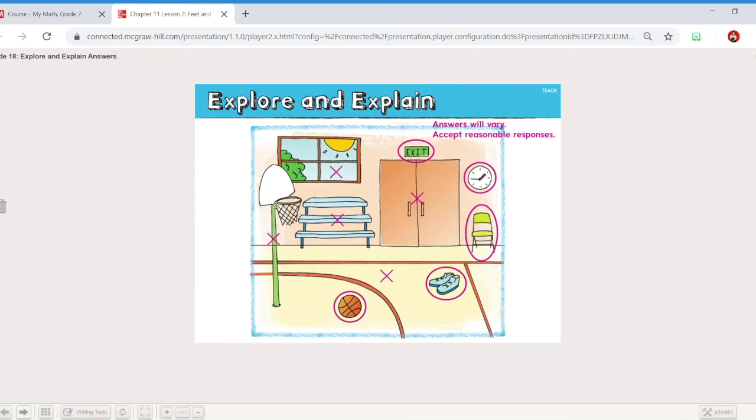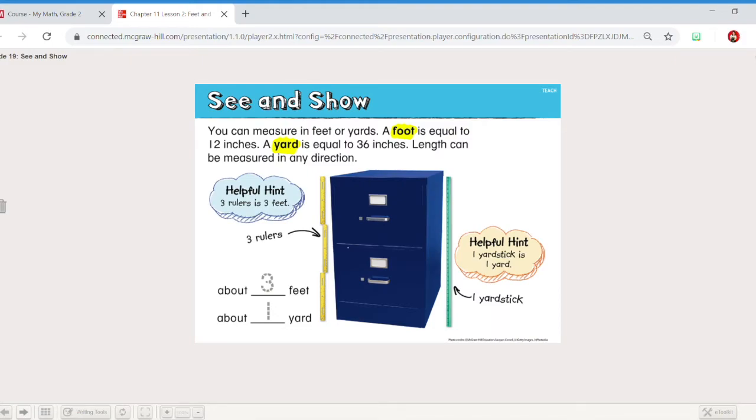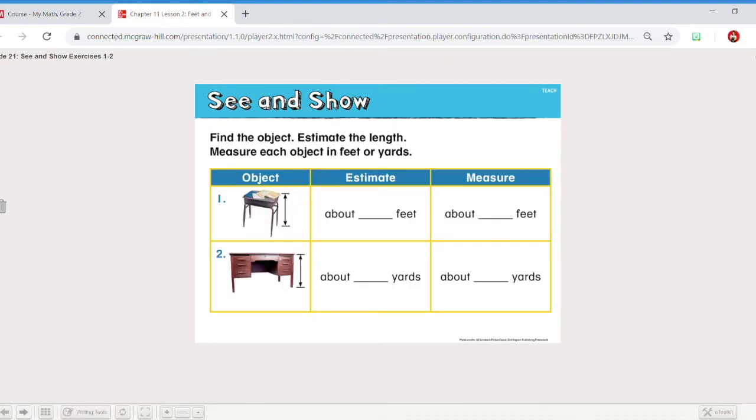Let's see what they say. They use the chair in inches. I think that could go either way. What do you think? It says you can measure in feet or yards. A foot is equal to 12 inches. A yard is equal to 36 inches. Length can be measured in any direction. So tall or wide, you can measure. So let's see what it says here. Three rulers is three feet. One yardstick is one yard. Good to know. So it says this cabinet is three feet, which would mean it's also one yard. So you can decide how you want to say. You could say that's a three-foot cabinet, or you could say that cabinet is one yard long.